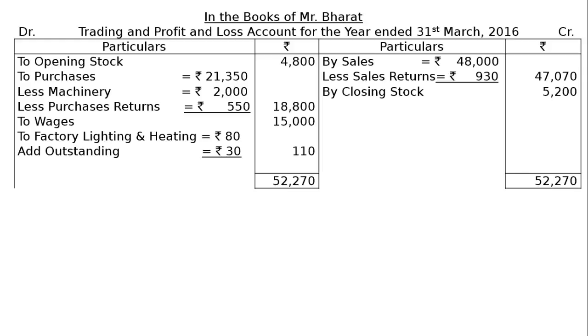The totalling on the credit side is Rs. 52,270. After deducting the four debit expenses, we get gross profit carried down — the balancing figure — of Rs. 13,560. In the profit and loss account, there will be by gross profit brought down Rs. 13,560.